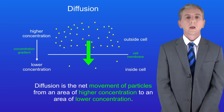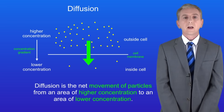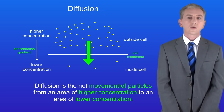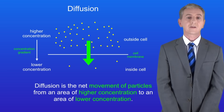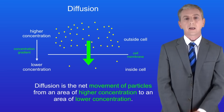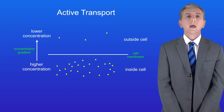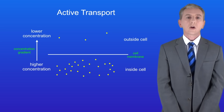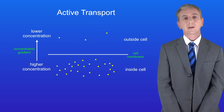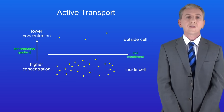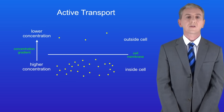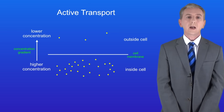Now there's a problem. What if a cell needs to bring in a molecule which is already at a high concentration inside the cell? In this example, there's a higher concentration of the molecule inside the cell than outside, meaning these molecules cannot diffuse into the cell — in fact they could diffuse out. So how can the cell bring these molecules in?